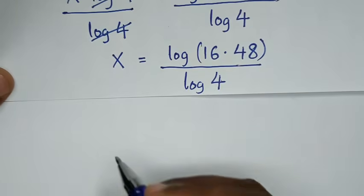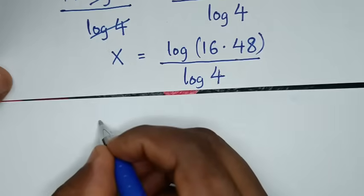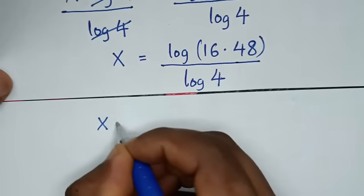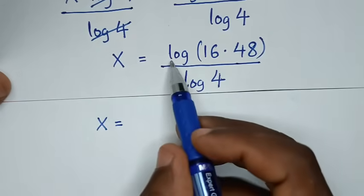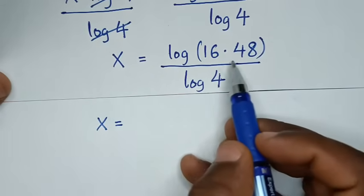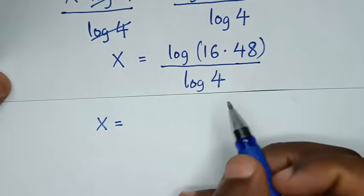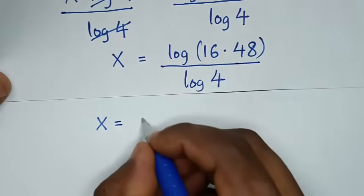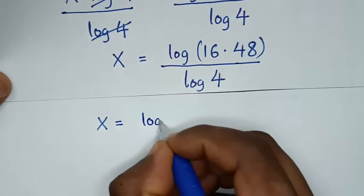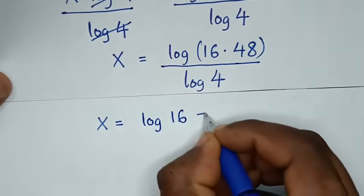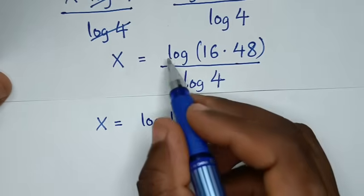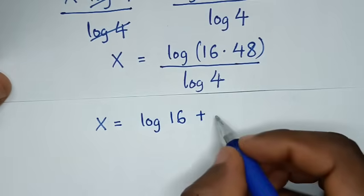Then in the next step, it will be x is equal to, and from log of 16 times 48, it will be log of 16 plus log of 48.